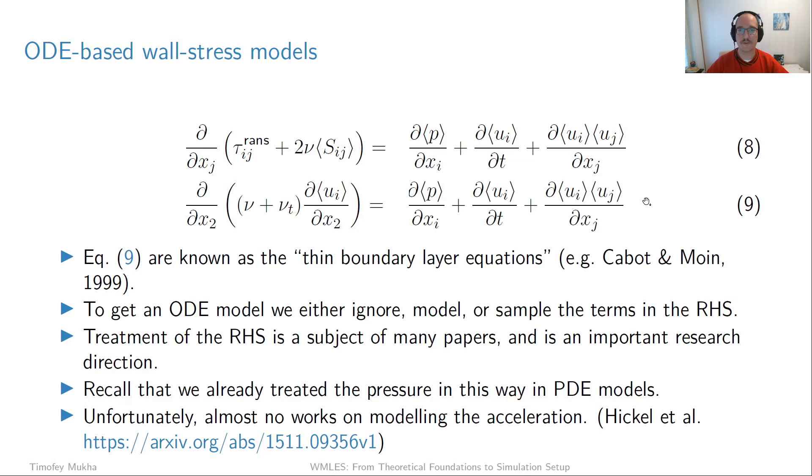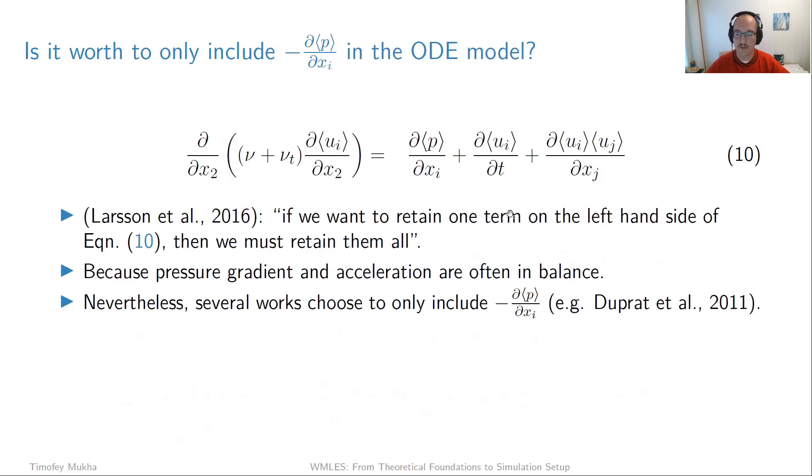Then we have this convective term. Unfortunately, we can no longer say that it remains constant throughout the inner layer. There are two possible solutions: remove it or try to somehow model it. The problem is that almost nobody has tried. The only paper I know on modeling the acceleration is this preprint by Hickel et al. available on arxiv. This study is a priori only. They don't actually run a wall model with a suggested type of modeling for the acceleration term.